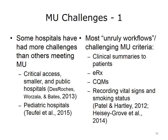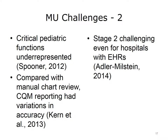However, there have also been challenges for Meaningful Use. Some categories of hospitals have had more challenges than others — in particular, critical access hospitals, smaller hospitals, public hospitals, and pediatric hospitals have had more difficulty meeting Meaningful Use requirements. Many EPs and EHs have noted the challenging criteria, which some describe as unruly workflows — things such as providing clinical summaries to patients, electronic prescribing, reporting clinical quality measures, recording vital signs, and recording smoking status. It has also been noted that some critical functions in pediatrics are underrepresented in the Meaningful Use criteria, and that compared with manual chart review, automated clinical quality measure reporting had some variations in accuracy. Finally, achieving Stage 2 has been challenging, even for hospitals that already had electronic health records.